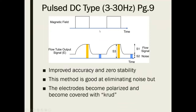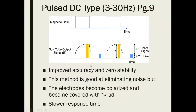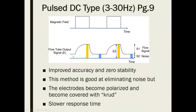A problem with DC excitation is polarization: because the voltage only goes in one direction, it attracts ions to the electrodes and they stay there since there's no reversing pulse to push them away. The electrodes become polarized and collect crud — that's the scientific term. This is the main problem with pulsed DC excitation. Also, these meters are a little bit slower compared to AC, since there are pulses with pauses between them.